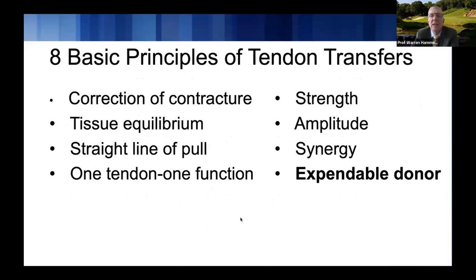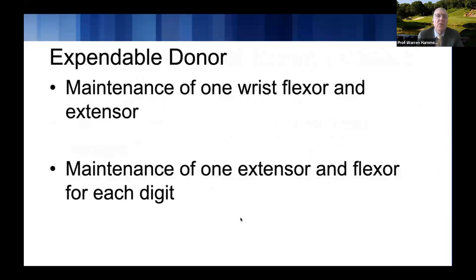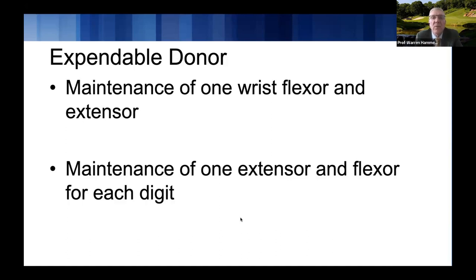An expendable donor means you don't want to take a muscle and cause a loss of function at the donor site. Fortunately, we have redundancy built in. For wrist flexion, we have the FCR, FCU, and palmaris longus — so we can use one while maintaining the others. You also need to maintain one extensor and one flexor for each digit. We can use the EIP for the index finger and the EDQ for the small finger in some transfers because each has a secondary extensor.